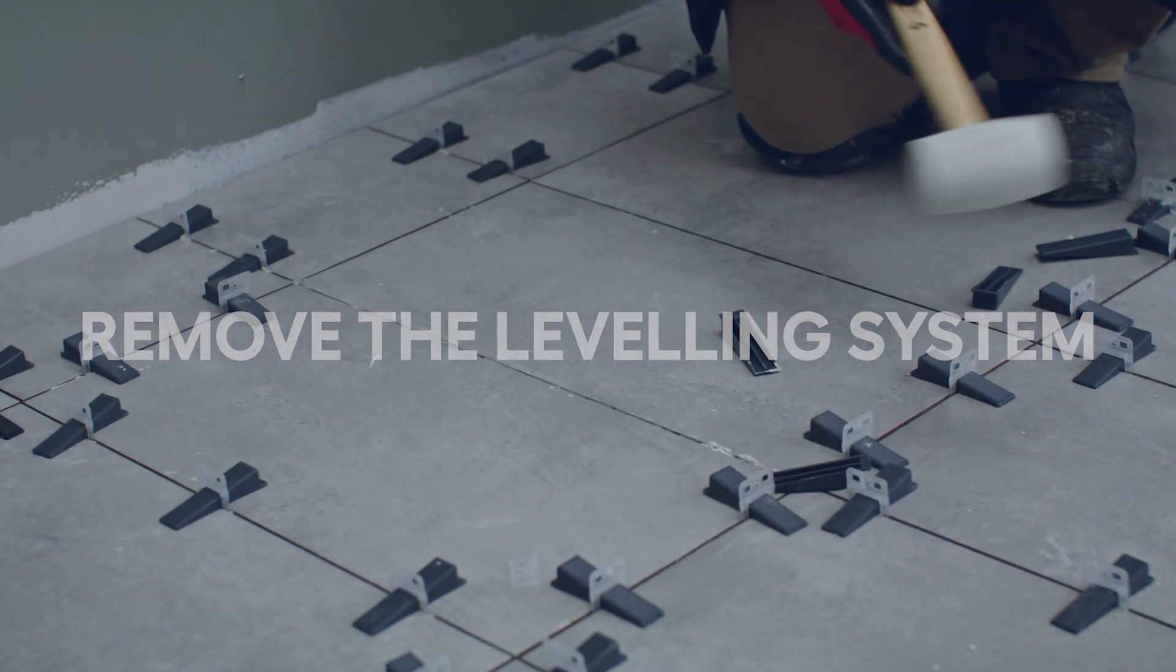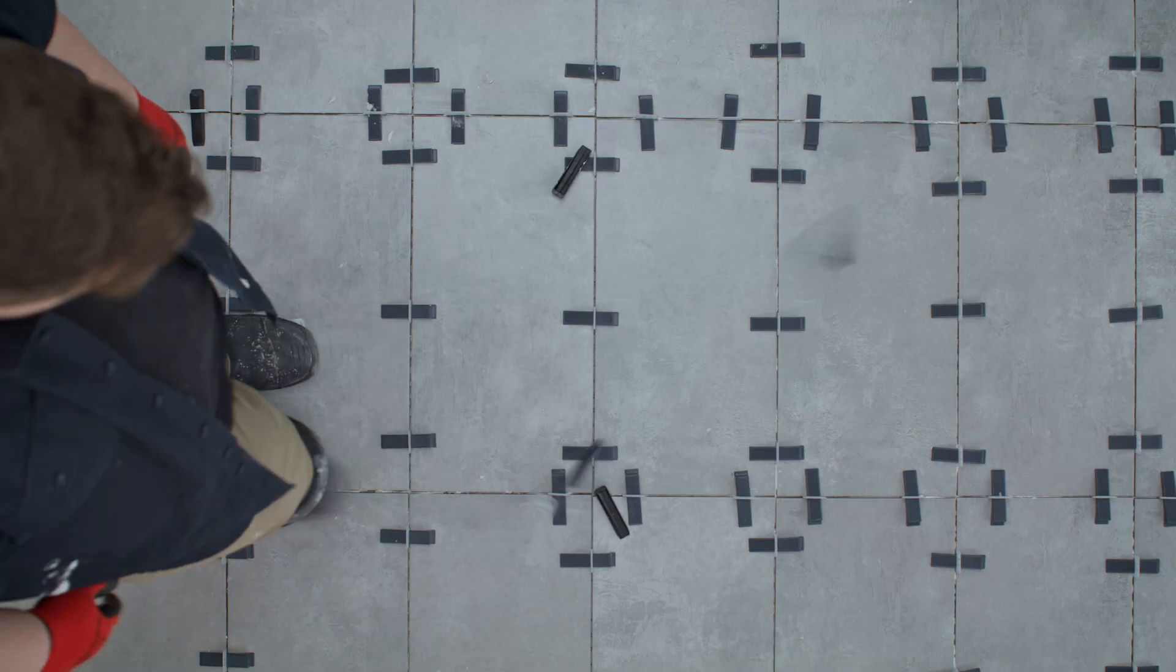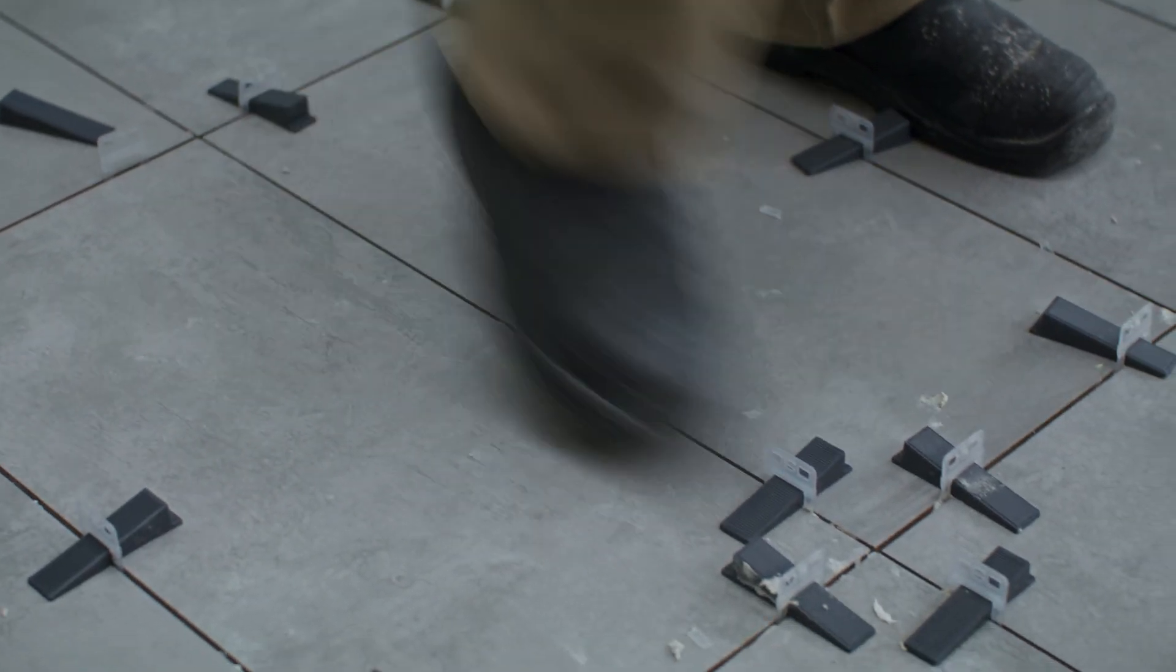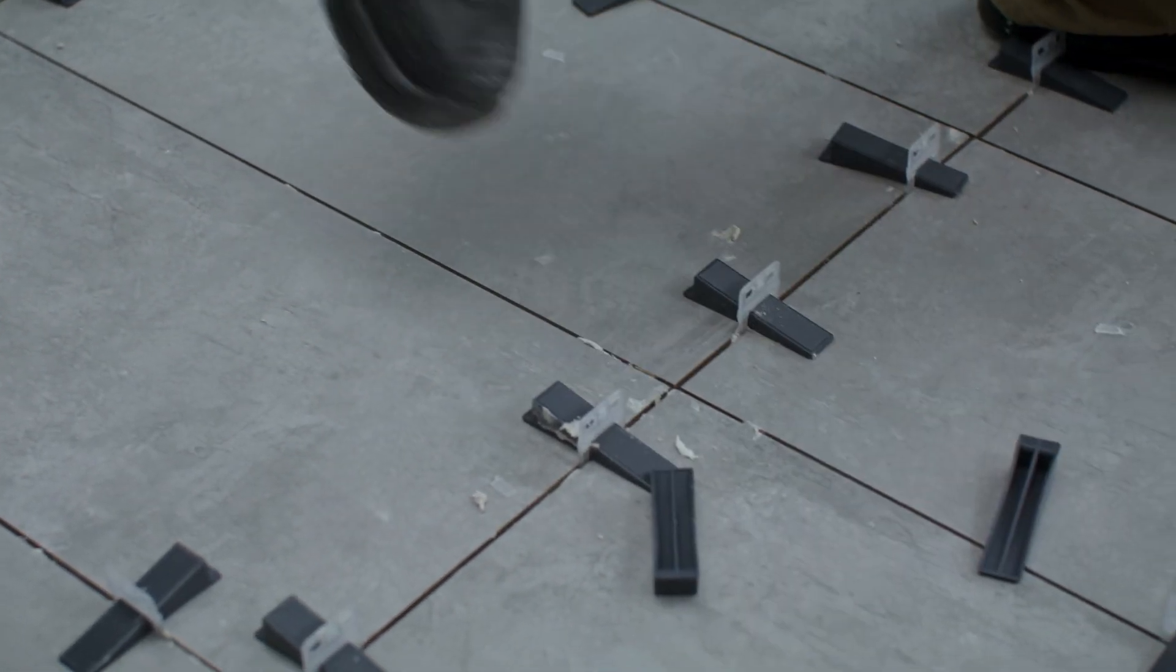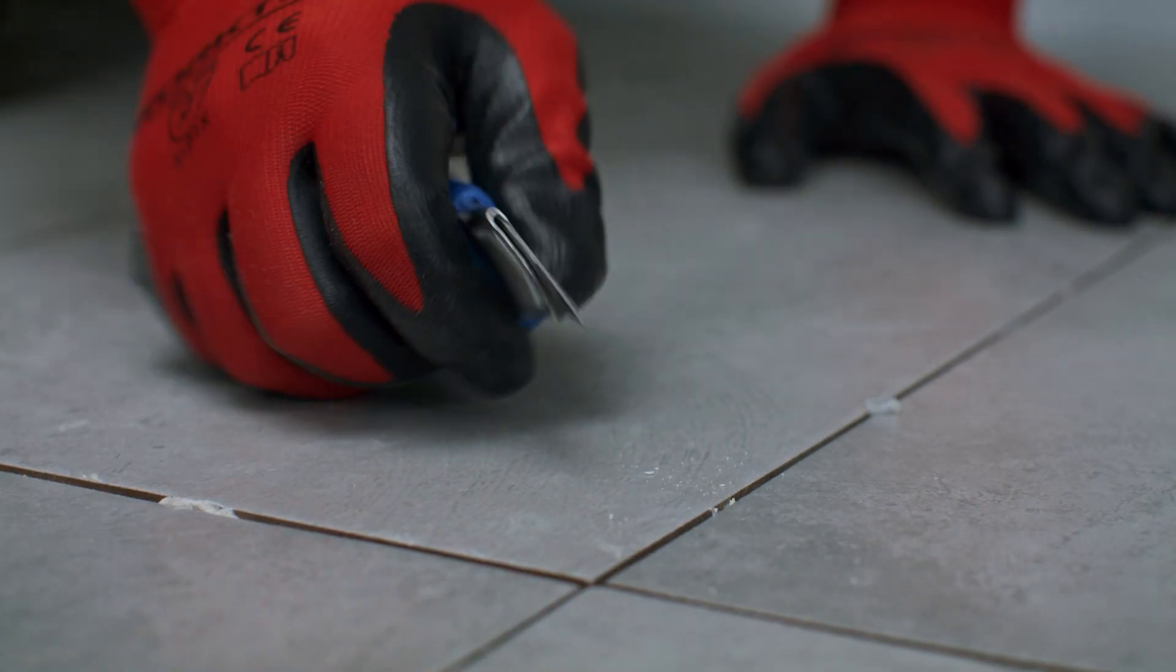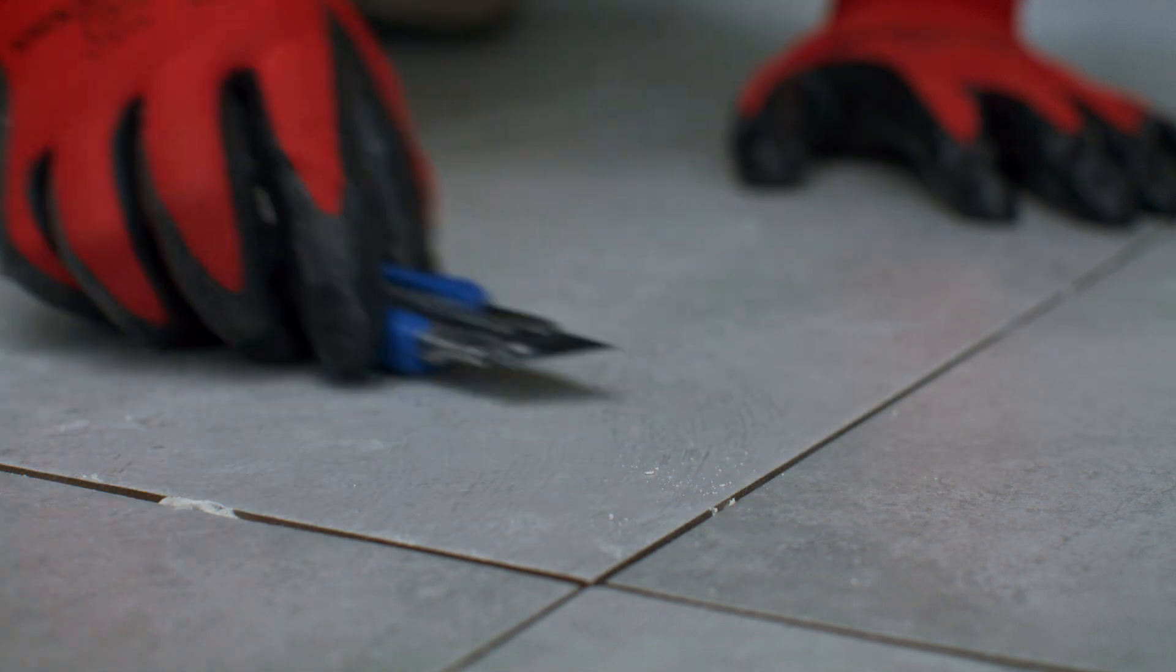Now, remove the leveling system. Tap down on the clips and wedges with a rubber mallet, or just use your boots to kick them out. Make sure you're working in the same direction as the joint. Some clips may be tricky to remove. Hold the utility knife at a slight angle, then cut the clip as low as you can go.